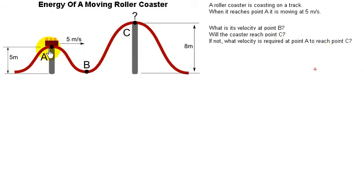As this coaster is moving, it's going to go up the hill and slow down. Does it have enough speed at point A to reach the top at point C? First question: What is the velocity at point B?